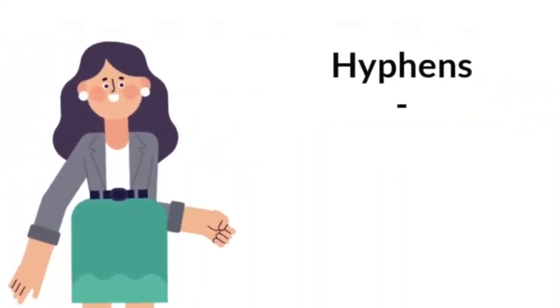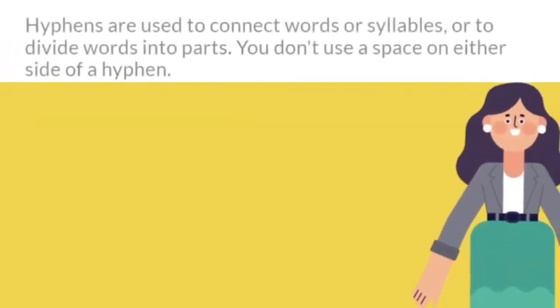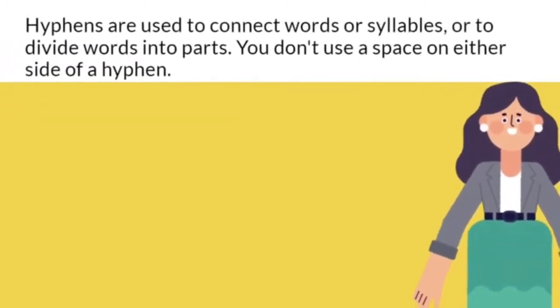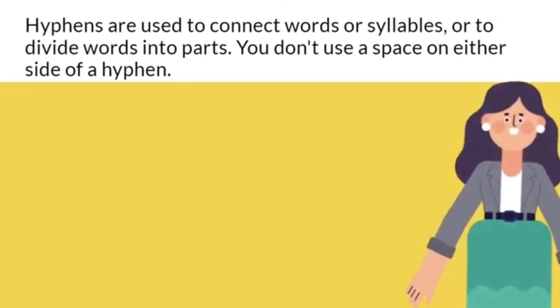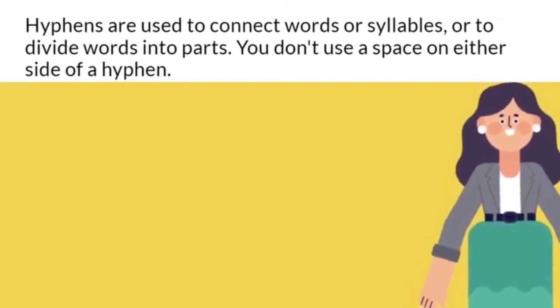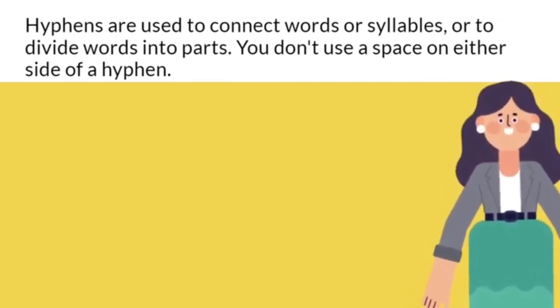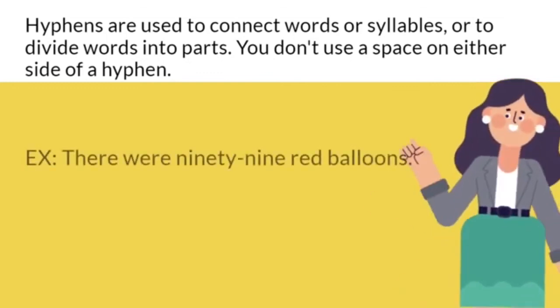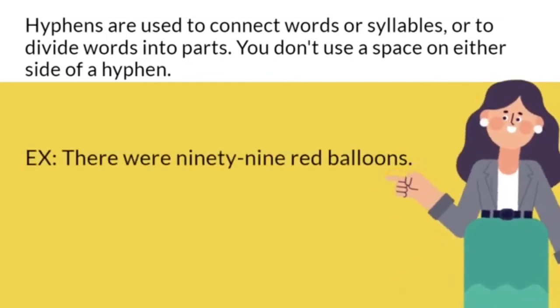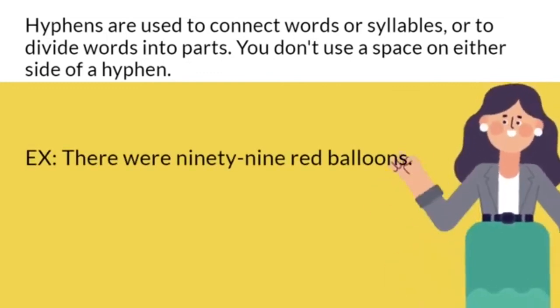Hyphens and their rules. Hyphens are used to connect words or syllables, or to divide words into parts. You don't use a space on either side of a hyphen. For example, there were 99 red balloons.